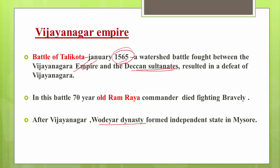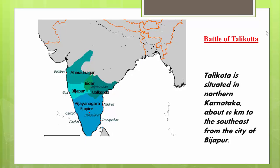After Vijayanagara, the Wodeyar dynasty formed an independent state in the region of Mysore. The Battle of Talikota — named after the place situated in northern Karnataka, about 80 kilometers southeast of the city of Bijapur — was where Vijayanagara was defeated by the Deccan Sultanates, leading to the weakening of the empire.